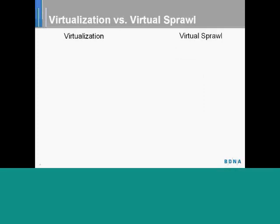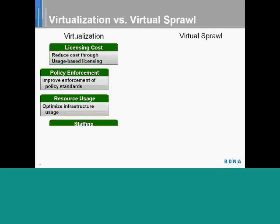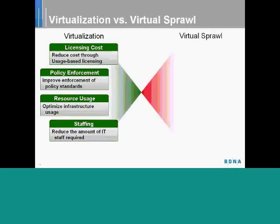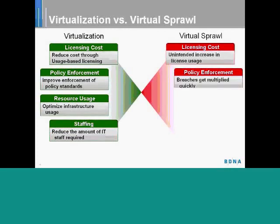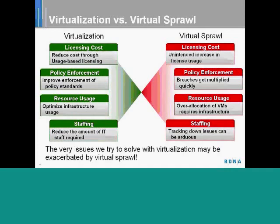Now, virtual scroll is a result of visualization, so we have a cause and effect relationship here. What's fascinating about virtual scroll is that many of the benefits that visualization has promised to deliver — in areas such as licensing costs, policy enforcement, and resource usage or staffing — are reflected almost in a mirror image as disadvantages as a result of virtual scroll. Those same areas are, in fact, exacerbated by virtual scroll. It's interesting to see how the very issues you are hoping to alleviate or solve with virtualization are, in fact, worsened by virtual scroll.